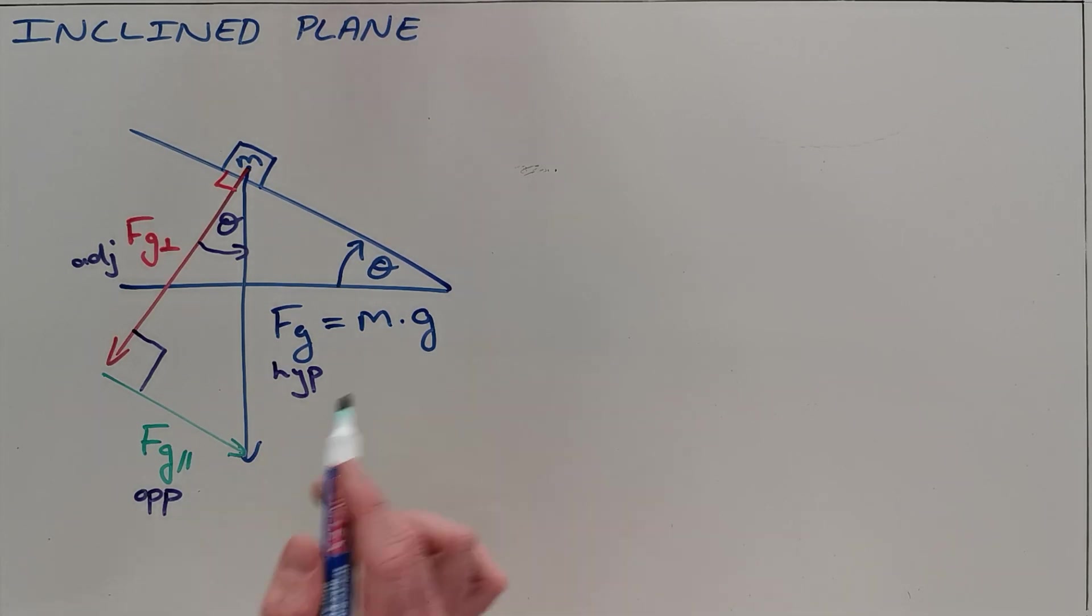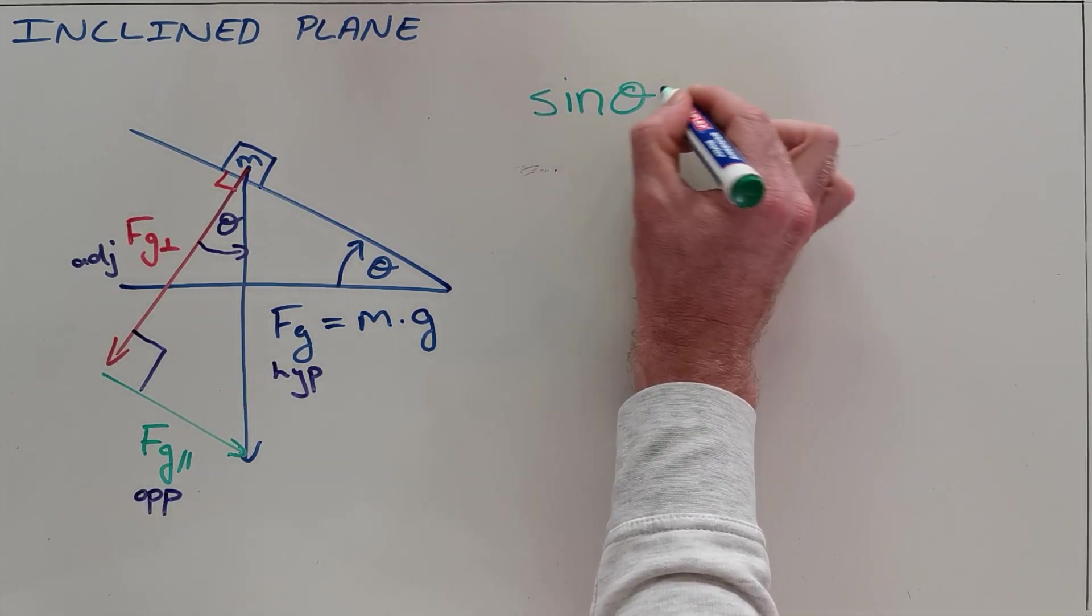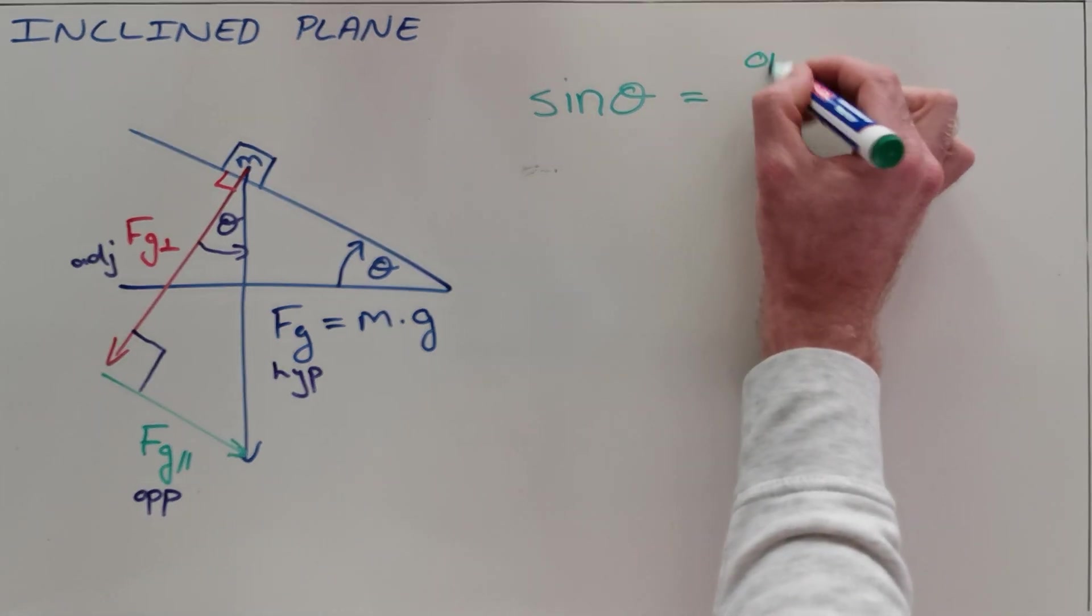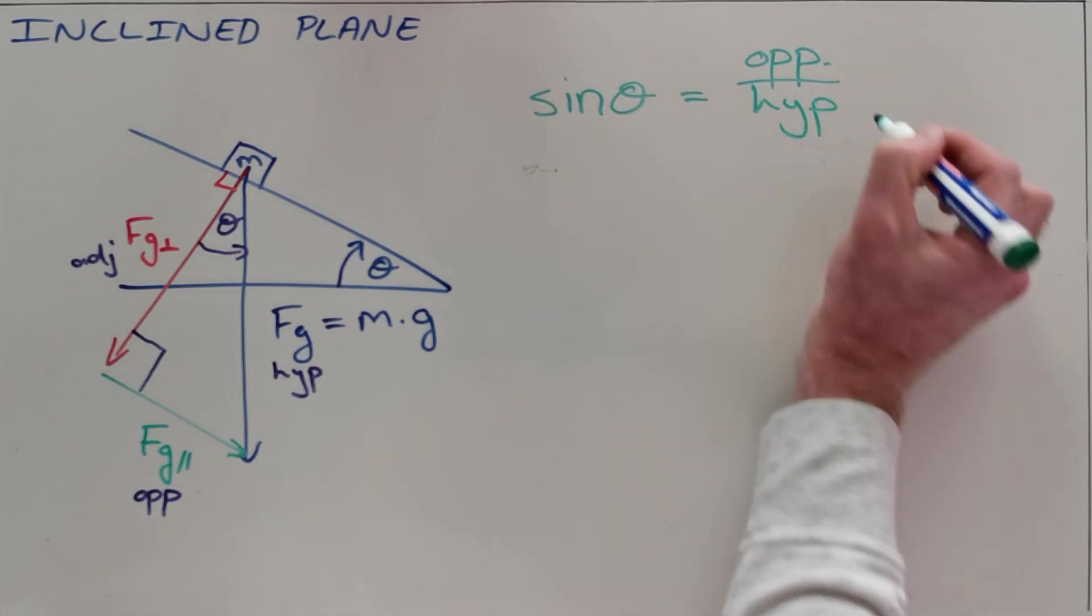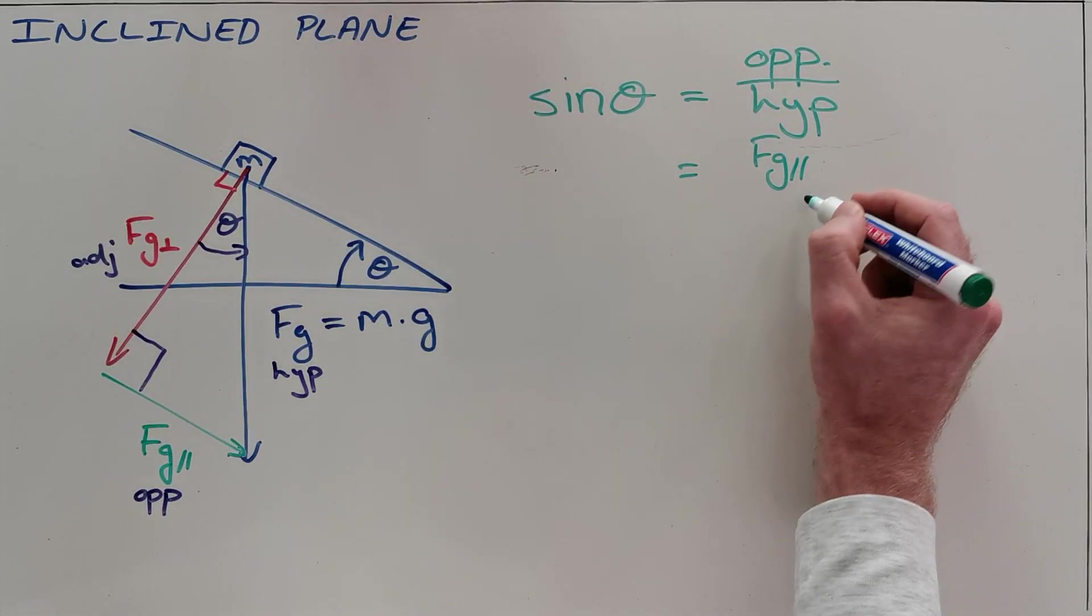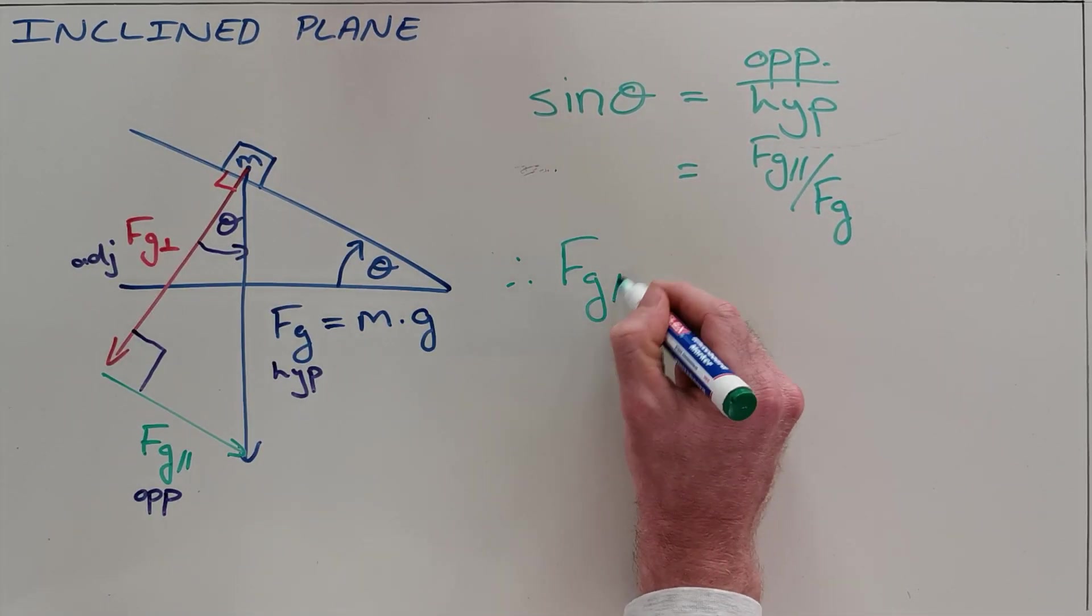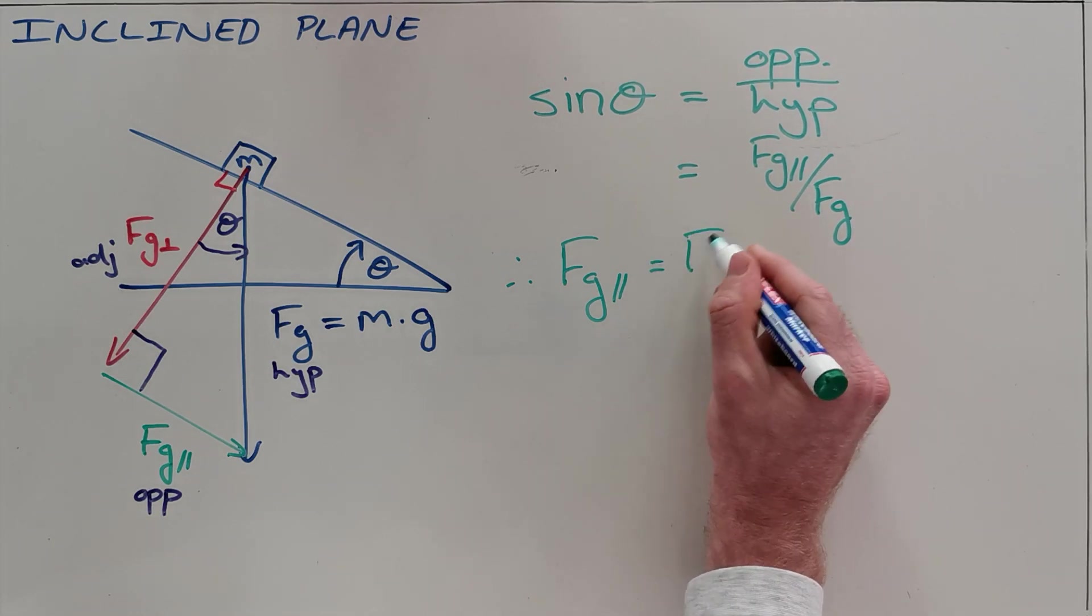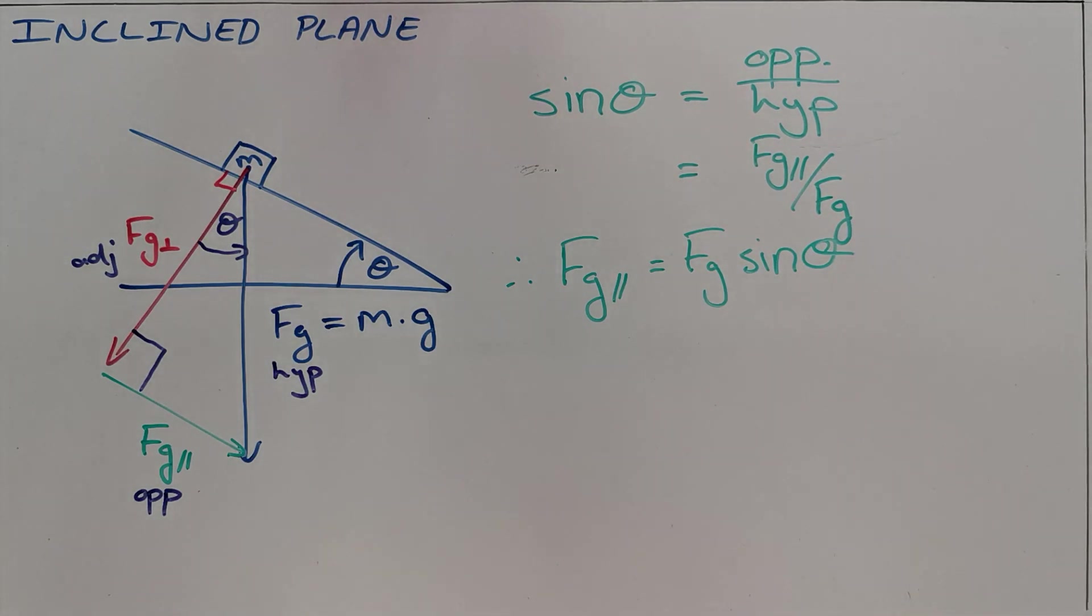By seeing that the opposite side is Fg parallel and we know that sin of theta is equal to the opposite side of a triangle over the hypotenuse of that triangle, which in this case the opposite being Fg parallel and the hypotenuse being Fg, which can then be simplified to give us the formula Fg parallel is equal to the force of gravity multiplied by sin of that incline.